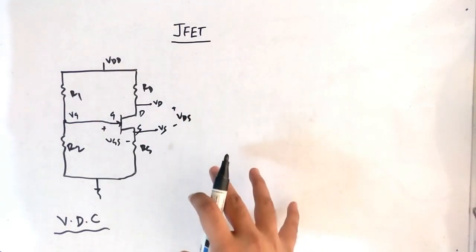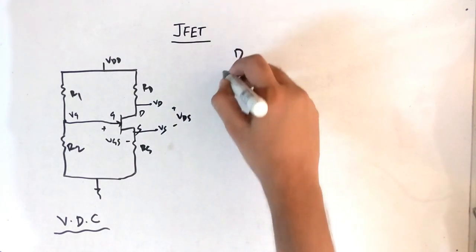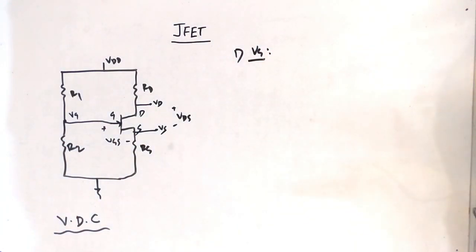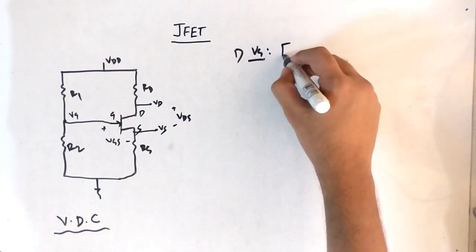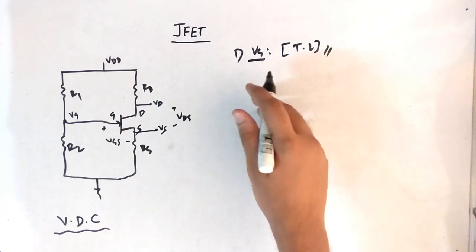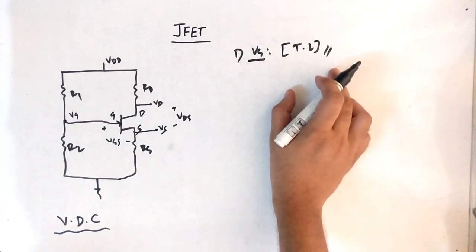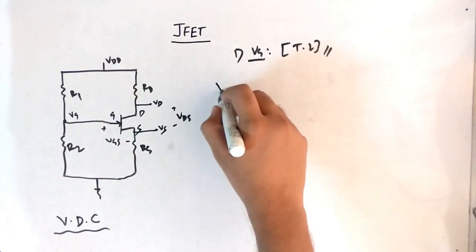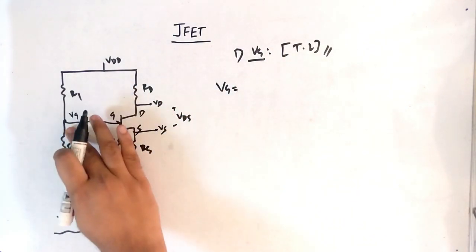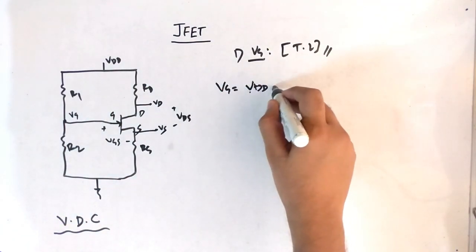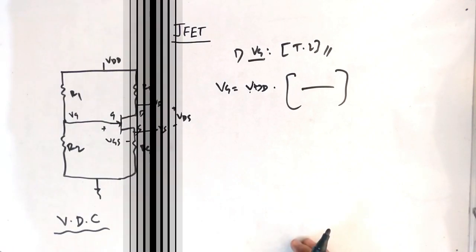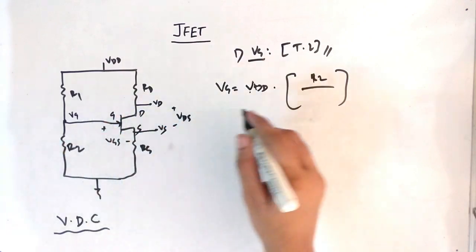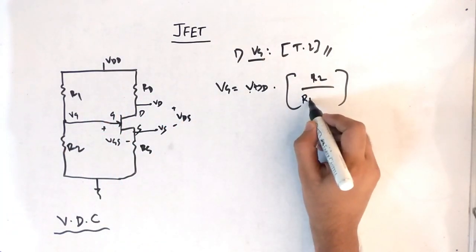Now you have to find the various parameters. The first point is you have to find the extra parameter VG. You can find VG by the Thevenin logic — I have already covered the Thevenin logic in my BJT videos in depth. When we apply the Thevenin logic, VG is equal to VDD multiplied by the resistance connected to ground, which is R2, divided by the total resistance R1 plus R2.